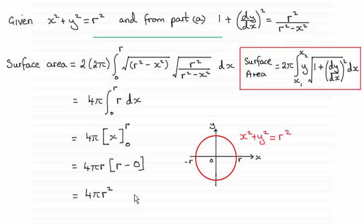But essentially, just in case there were any problems, the surface area is always given by this formula here: 2π times the integral from x₁ to x₂ of y times the root of 1 plus (dy/dx)² integrated with respect to x. And you can see this formula in your formula book.